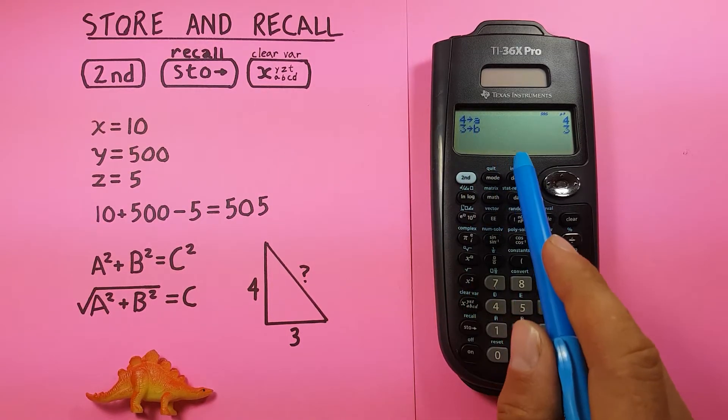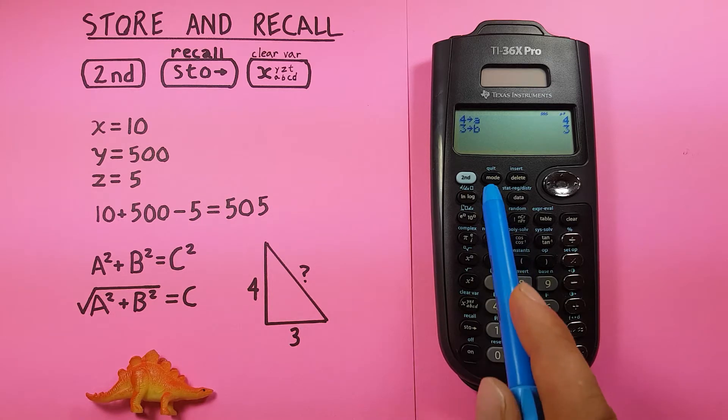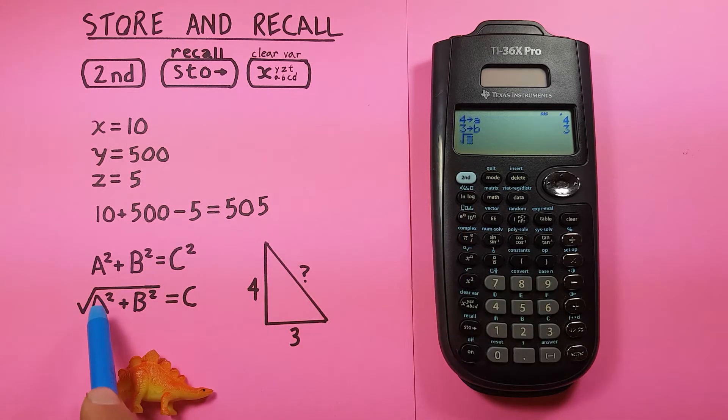Alright, we have these stored now. So, we now know that these are our variables, and this is our formula. So, we just want to enter that by going second square root to start.